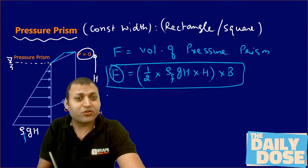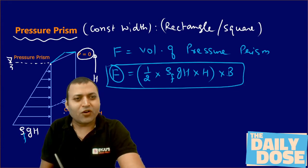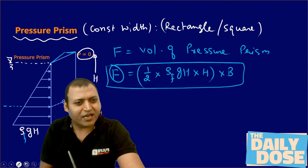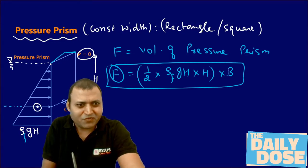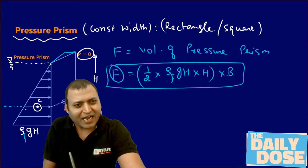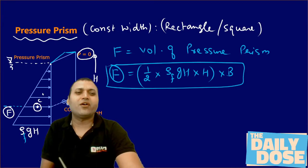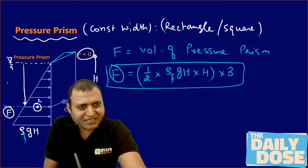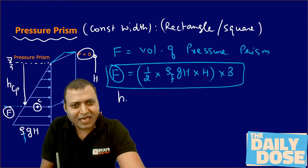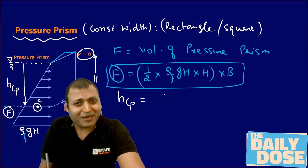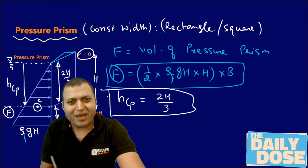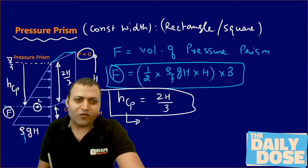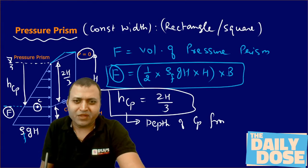Not only the magnitude of hydrostatic force, we can also find the line of action of this hydrostatic force. The line of action passes through the centroid of the pressure prism. The centroid of the pressure prism is at 2H/3 from the top, and H/3 from the bottom. This gives us the depth of the center of pressure CP from the free surface.